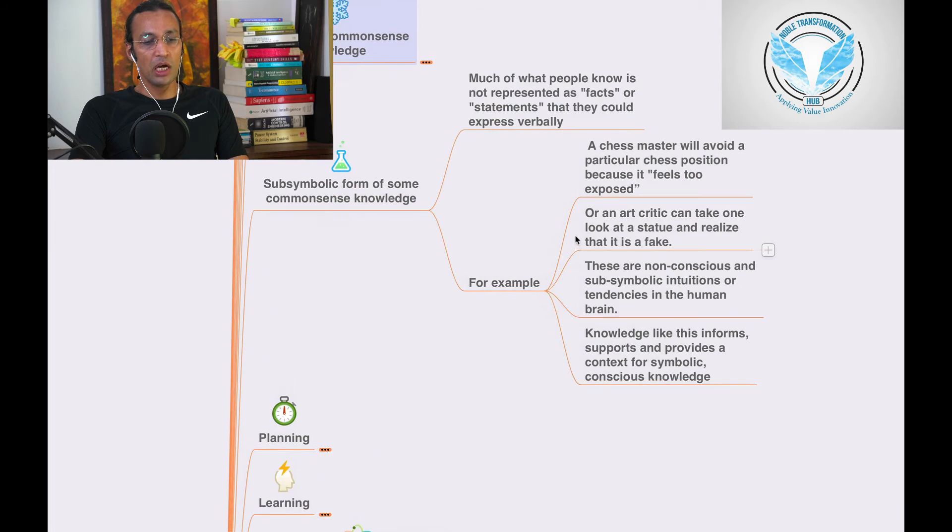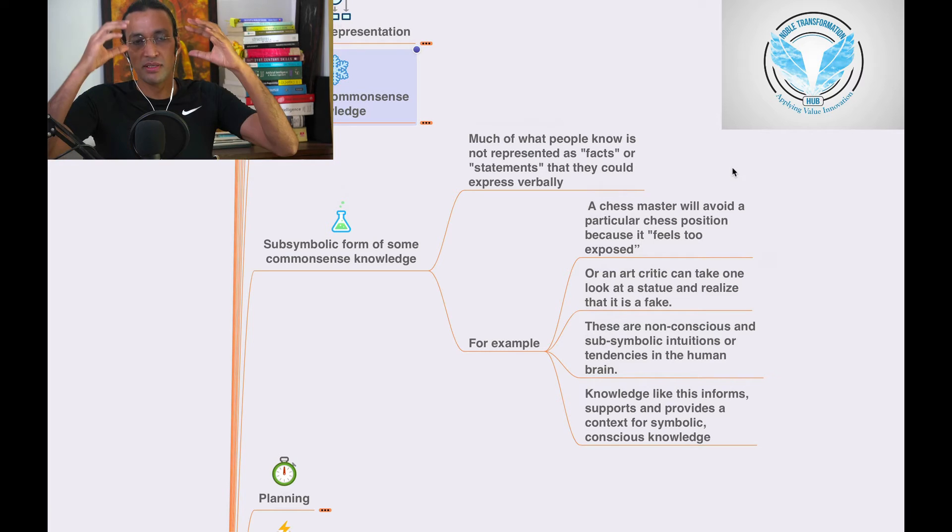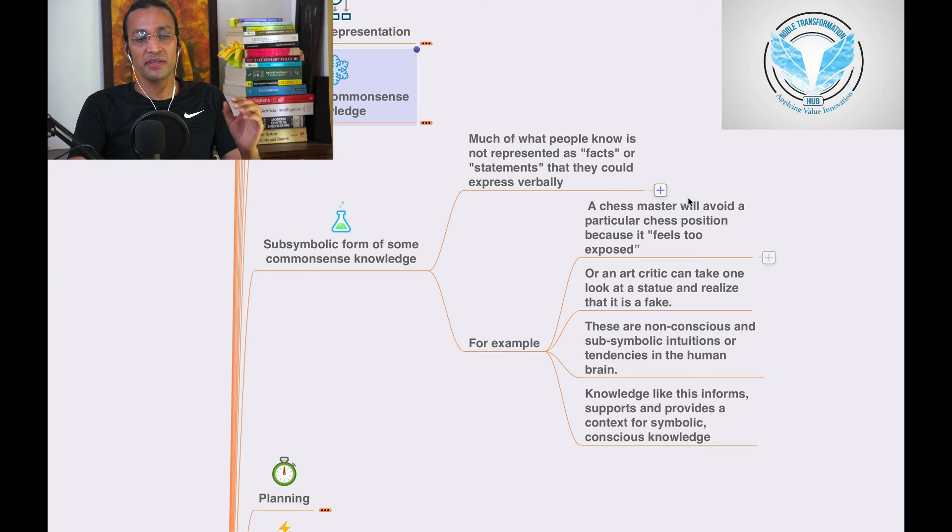Then we come to the concept called sub-symbolic form of some common sense knowledge. Much of what people know is not represented as facts or statements that they could express verbally.